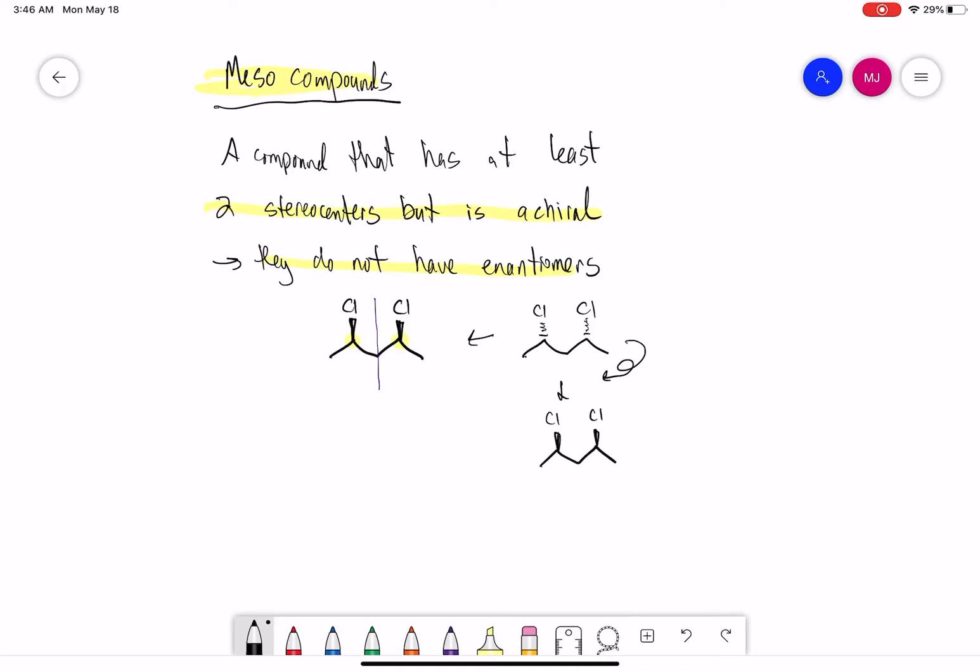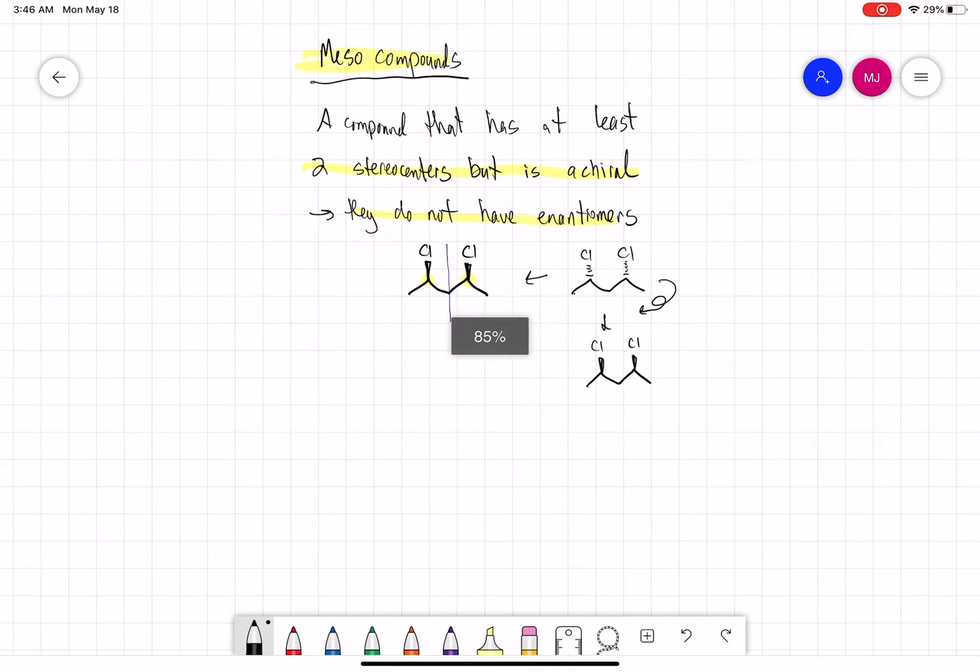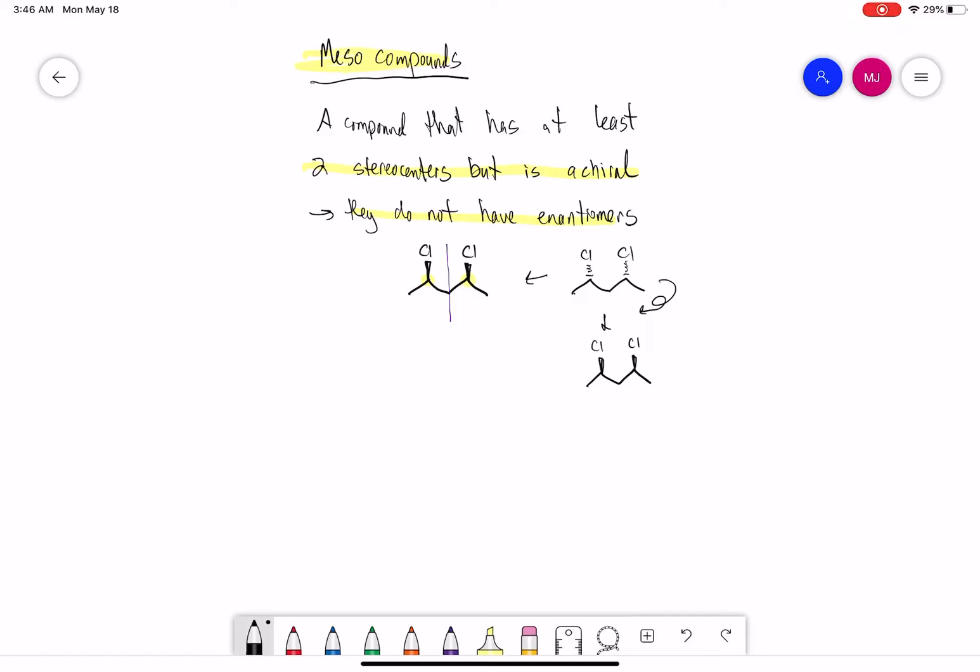They don't have enantiomers—it's the same molecule, it's identical. So meso compounds are achiral. Let me draw a few more examples here.